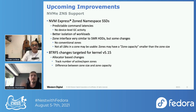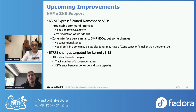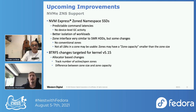These SSDs offer a similar zone device interface to SMR HDDs but with some changes - for example, you have no conventional zones, meaning you always have to write sequentially to all zones in the device. Also, not all LBAs may actually be usable - a ZNS SSD may have a capacity of a zone smaller than the actual zone size. This means there are changes needed in the extent allocator of the file system, which tracks the number of active and open zones, to not exceed device limits. And we have to differentiate between the zone size and the zone capacity to not allocate over a zone's capacity.